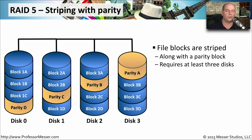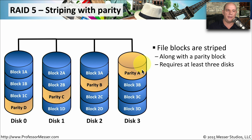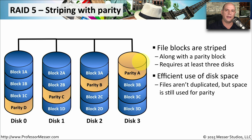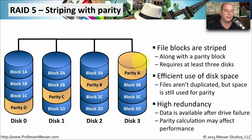RAID 5 takes the striping of RAID 0 but adds a parity bit to the data. We stripe information across multiple disks and need at least three physical disks. On the last disk, we add a little bit of parity information, which lets us use disk space efficiently — we're not creating an exact duplicate, just adding parity alongside the data. If you lose any one physical disk, we can recreate the data using the parity information, though calculations must be performed while the drives are in that limited state. Once you replace the bad drive, it rebuilds and everything returns to normal RAID 5 configuration.